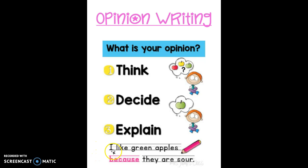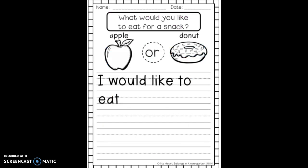Here's an example: I like green apples because they are sour. Now I'm going to give you an example of opinion writing. This paper says, what would you like to eat for a snack — an apple or a donut? I'm thinking and deciding that I would like to have a donut for a snack, so I'm circling the donut.